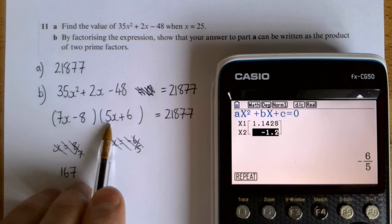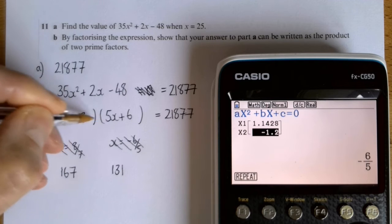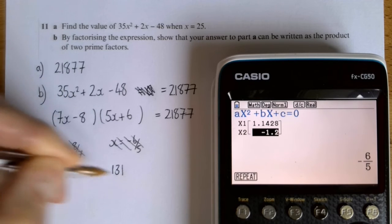So that's 167, and 5 times 25 is 125, so that's 131. So 167 times 131, those two are being multiplied. So what we're saying is this.